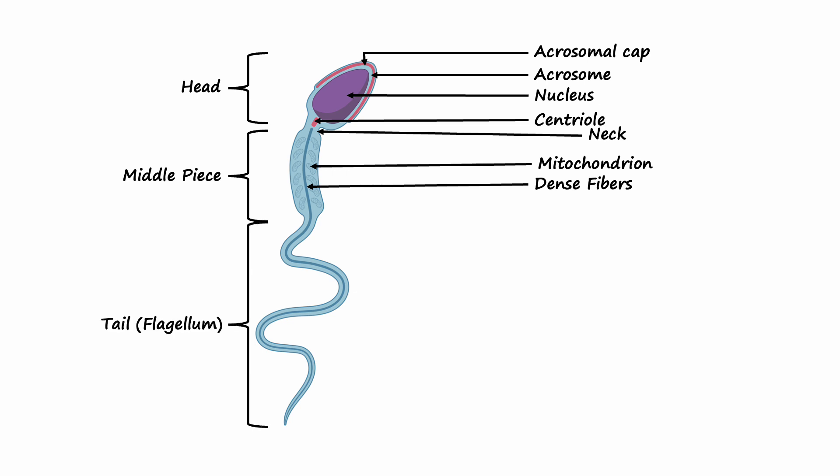The tail, also known as the flagellum, is the longest part of the sperm cell. It's responsible for propelling the sperm cell towards the egg. It's like a tiny motor, allowing the sperm to swim through the female reproductive tract.